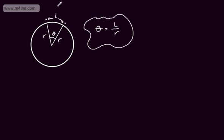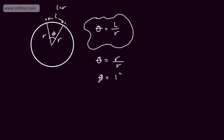If we take l to be equal to r, then theta will be equal to r over r, which gives theta equal to 1 — or more precisely, 1 radian. The notation we use is a little c. So if we have a circle with radius r and arc length r, the angle subtended is going to be 1 radian.